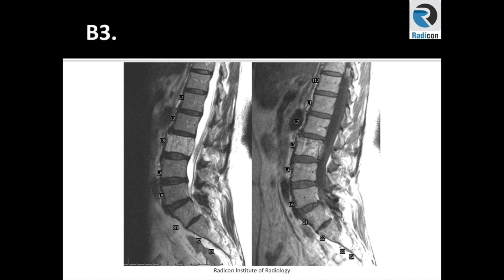This case shows sagittal images of a hemangioma in the L3 vertebral body. Typical appearances are high T1 and T2 signal intensity with enhancement in post-contrast sequences. Incidence is approximately 10%. Infrequently, these can turn symptomatic and cause neurological deficits such as cord compression through any of the four reported mechanisms: epidural extension, extension of the involved vertebrae causing spinal canal stenosis, spontaneous epidural hemorrhage, or pathological burst fractures.